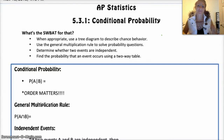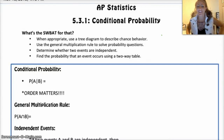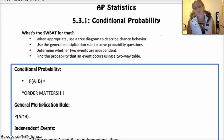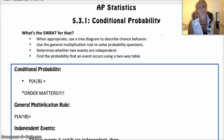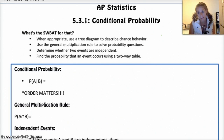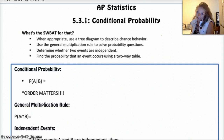Hello, my AP statisticians. Hope you guys are having a great day. We are moving on to 5.3, and that's in the Practice of Statistics, Chapter 5, Section 3. We're going to talk about conditional probability and independent events.